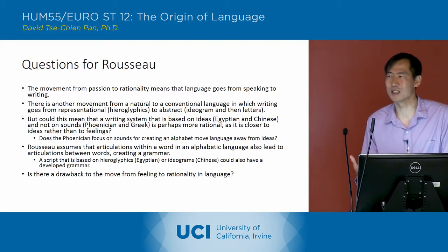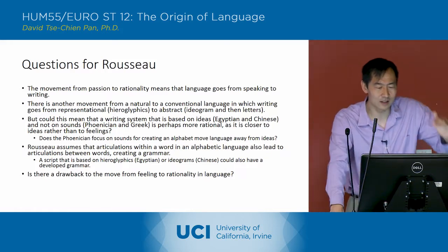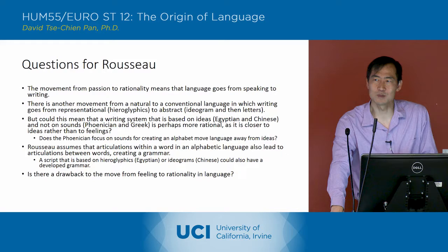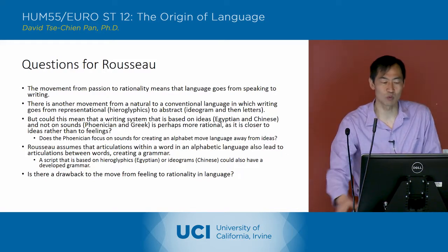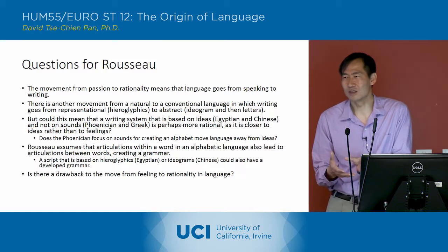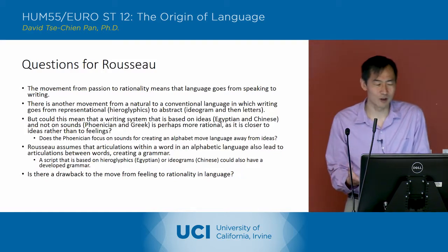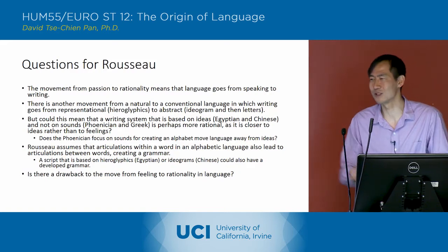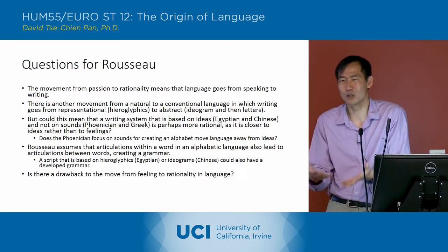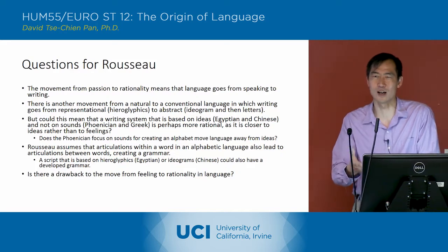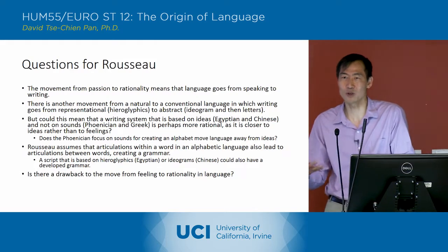One of the things that is curious about his schema is that a writing system actually based on ideas — which is more like the Egyptian and Chinese writing systems rather than on sounds — you could conceive of that as really more rational, because it's closer to ideas rather than feelings. If you're focusing on the sounds themselves, then you're not really focusing on the ideas; you're focusing on the emotional, sound part.